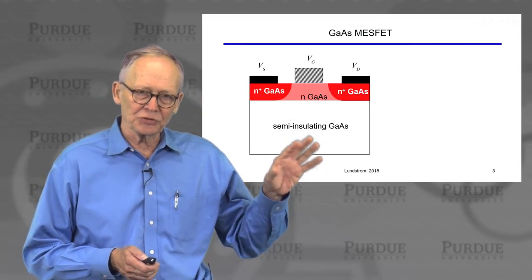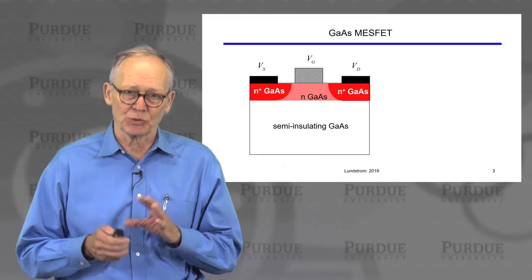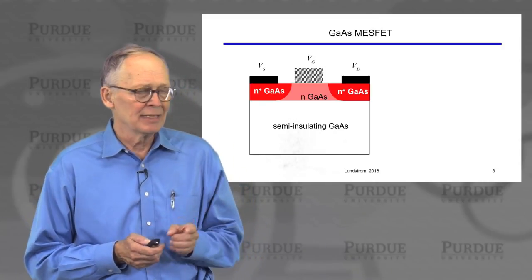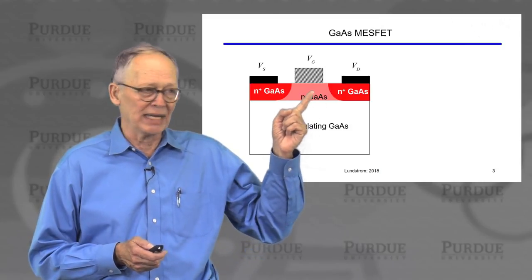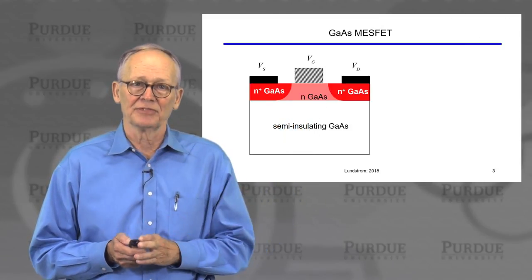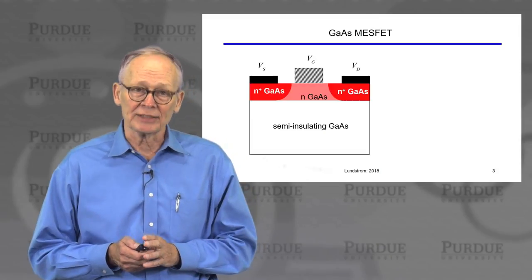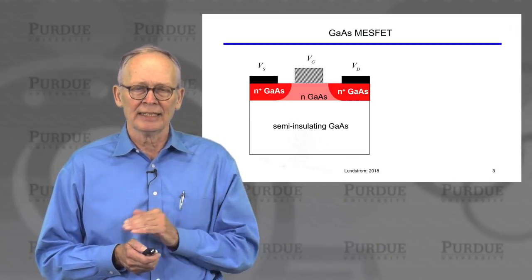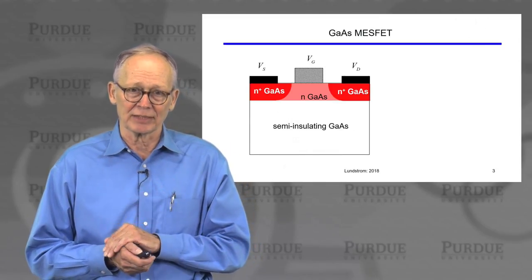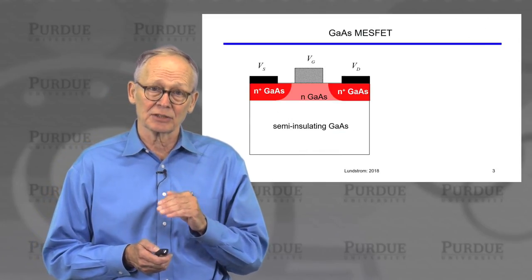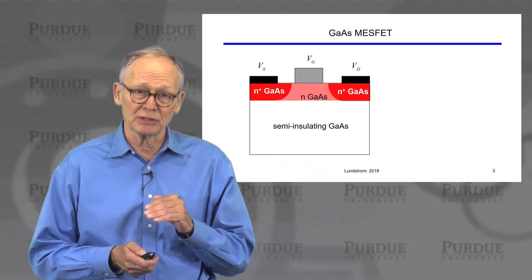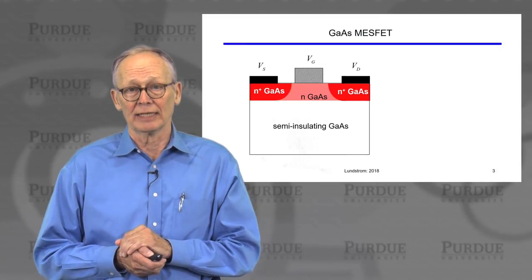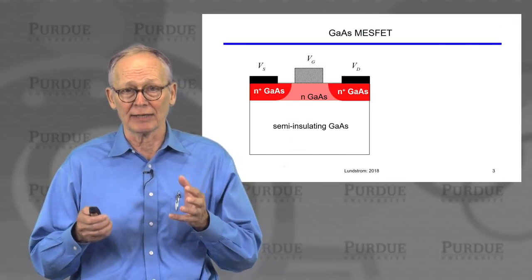The first 3-5 transistors used commercially were gallium arsenide MESFETs. MESFET stands for Metal Semiconductor Field Effect Transistor. There was no insulator because it was very difficult to produce high-quality insulating layers on 3-5 semiconductors. These semiconductors were of interest because of their very high mobilities, making them promising for high-speed RF applications.